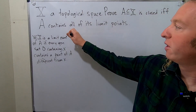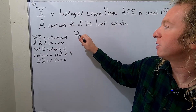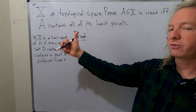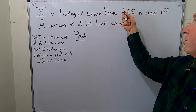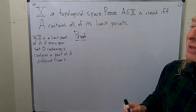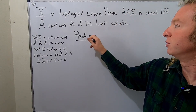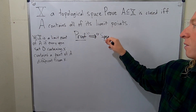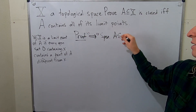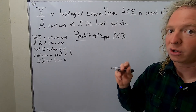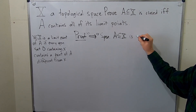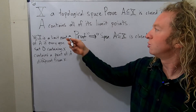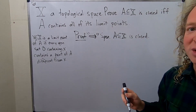Let's go through the proof very carefully. We'll do it in two parts because this is an if and only if statement. I'm going to prove this direction first. We'll start by assuming that A is a closed subset of capital X, and we're going to show that A contains all of its limit points.